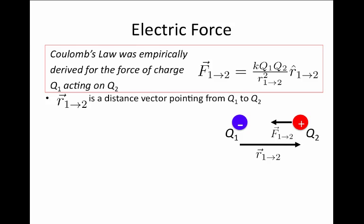First, there's the distance between the two charges. R1,2 is actually a vector. It is the vector that points from charge number one to charge number two.